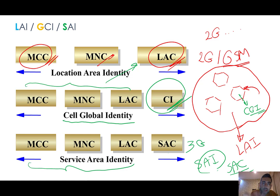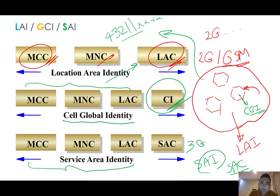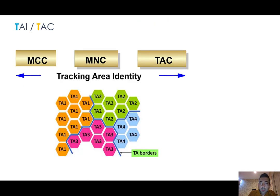For example, in Iran, for the MCI operator, when we want to define a LAI — Location Area Identity — we can write 432 for MCI operator, then 11, and this forms the LAI. As I mentioned, for each generation of mobile networks we have a specific method of showing the areas.